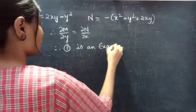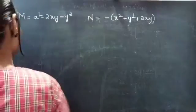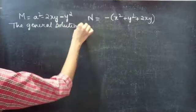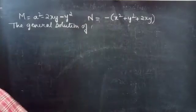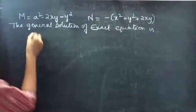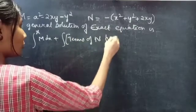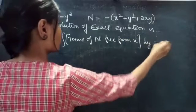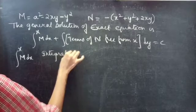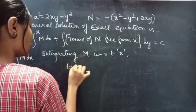So we can say that the given differential equation is an exact equation. Now we can find the general solution to the given exact differential equation. We know that the general solution of an exact equation is given by: integral over x of M dx plus integral of terms of N free from x into dy equals to constant.